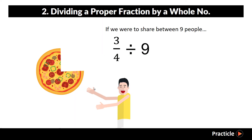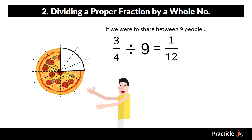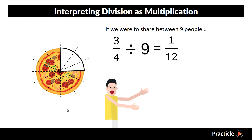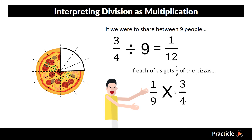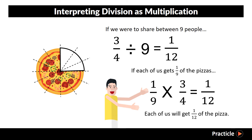Now let's look at another question where we divide a proper fraction by a whole number. Here's 3 quarters of a pizza. If we were to share it between 9 people, each of us will get 1 out of 12 of the pizza. It's time to recall what we discovered earlier — a division problem is the same as a multiplication problem. Sharing the pizza between 9 people means the same thing as each of them getting 1 over 9 of 3 quarters of the pizza, and solving that gives us 1 over 12 too. The answer is the same regardless of whether we divide or multiply.